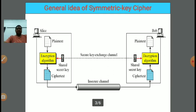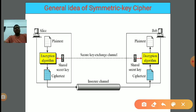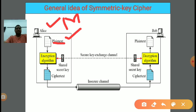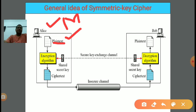Now in today's lecture, I am revising what a symmetric key cipher is and how to generate one. Suppose the sender wants to send a message — the message is in the form of plain text. This is our original message. We want to transmit this message over an insecure channel to the receiver, so this plain text needs to be encrypted or made secure with the help of some algorithm.